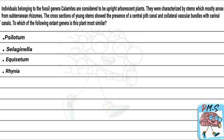Let's read this question. Individuals belonging to fossil genera Calamites are considered to be upright arborescent plants. They were characterized by stems which mostly arose from subterranean rhizomes. The cross-section of young stems showed the presence of a central pit canal and collateral vascular bundles with carinal canals. To which of the following extant genera is this plant more similar?